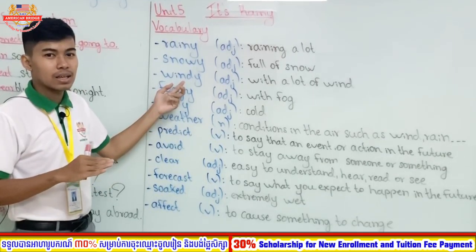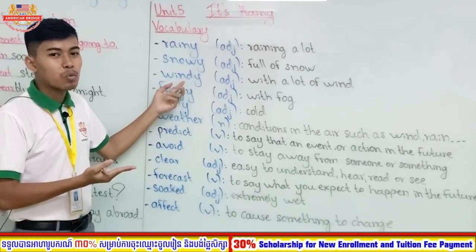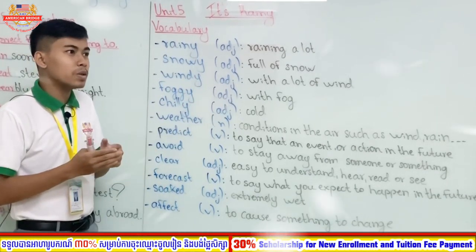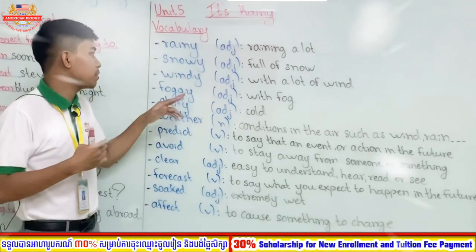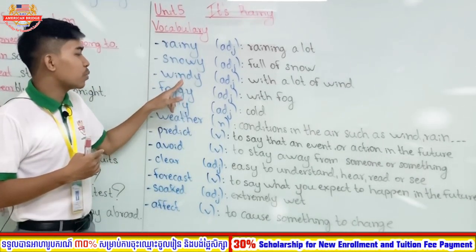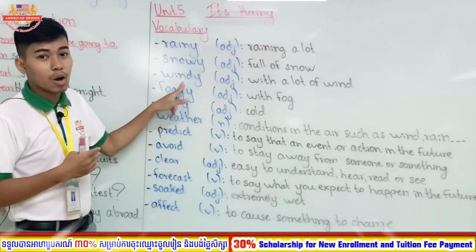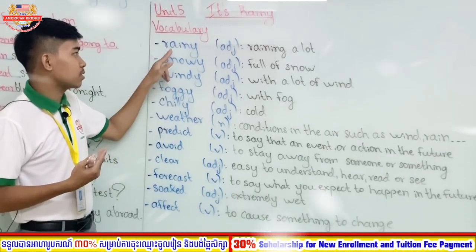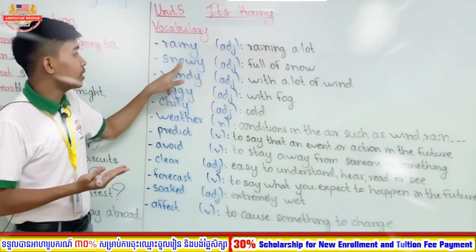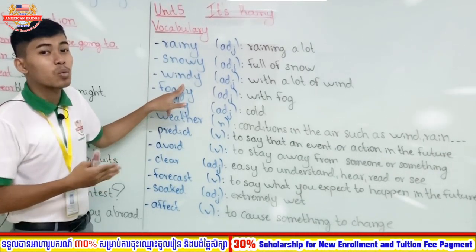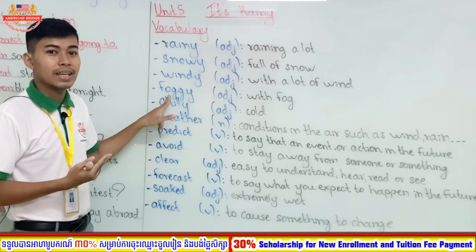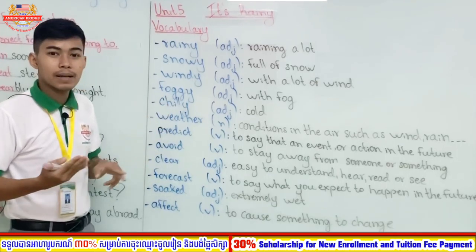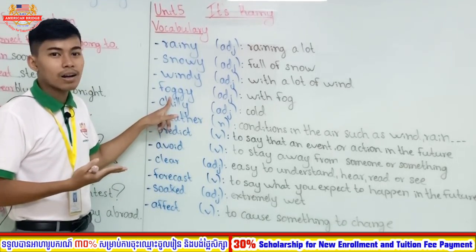The next word is 'windy.' Windy is an adjective meaning with a lot of wind. When you stay at home and there is a lot of wind coming at you, it is windy. Normally windy weather is cold — when the wind comes, it makes us feel cold. So: rainy means a lot of rain, snowy means a lot of snow, windy means a lot of wind.